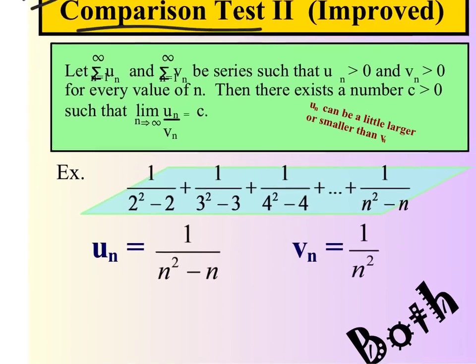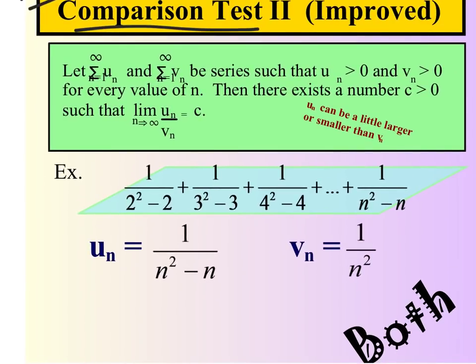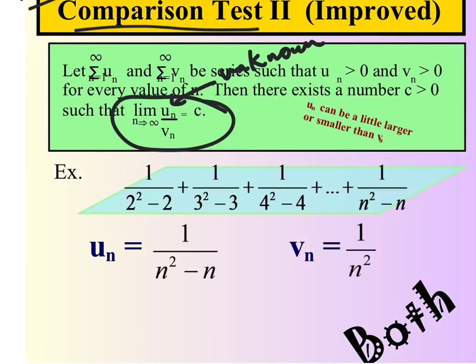The nice part about the limit comparison test is you just have to know a known convergent or divergent series — that's all you need. It doesn't matter if it's smaller or larger. What we do is take the limit as n goes to infinity of the unknown sequence divided by the known sequence. The trick to this is knowing what to compare it to.